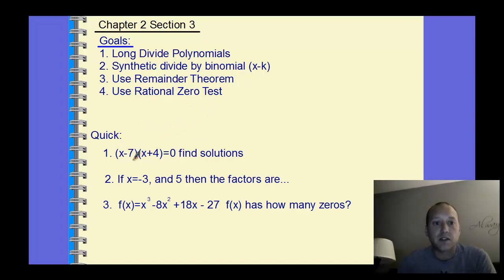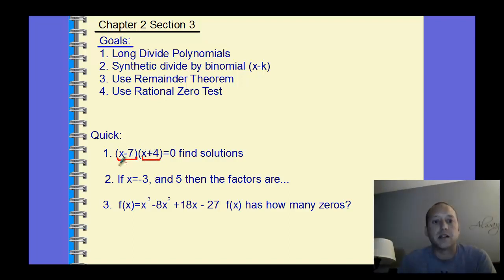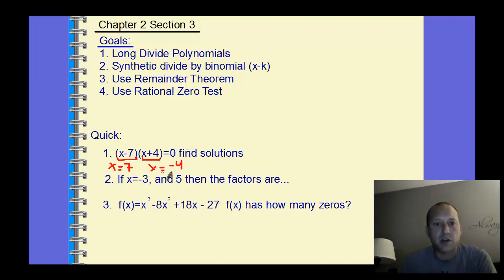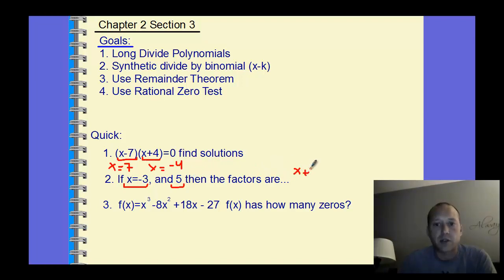Let's quickly review some basic algebra on finding zeros from factored form. If they're already factored, we just set each of the products equal to zero to find our solutions of 7 and negative 4. Going the other direction, if you're given the zeros, we should be able to write the factors. A zero of negative 3 comes from the factor x plus 3, and a zero of 5 comes from the factor x minus 5.